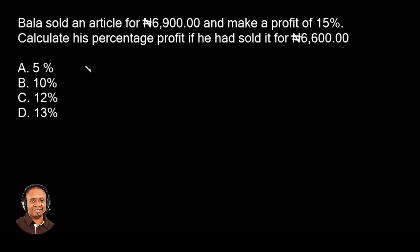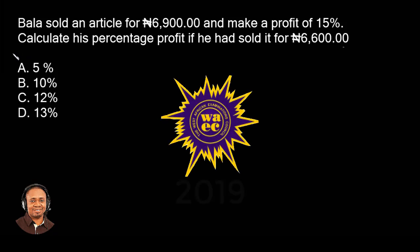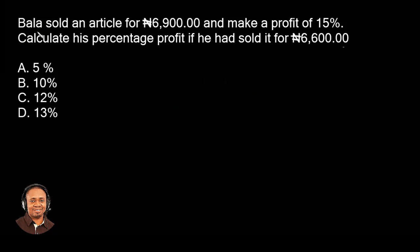Hi, I'm Oluwakemi. I'm so excited to have you here again. This is another math question from 2019. Ballast sold an article for 6900 Naira and made a profit of 15%. Calculate his percentage profit if he had sold it for 6600 Naira.